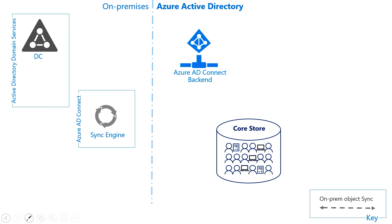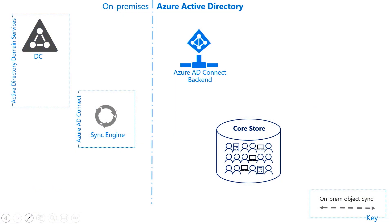The first thing to know is that password hash sync has two scenarios. One is the actual synchronization of the password hashes, and the second part is how to use those hashes to authenticate. You can only turn on synchronization, and in fact that's what a lot of our customers do when they are federated — they do that at the beginning, feel comfortable about it, and eventually migrate.